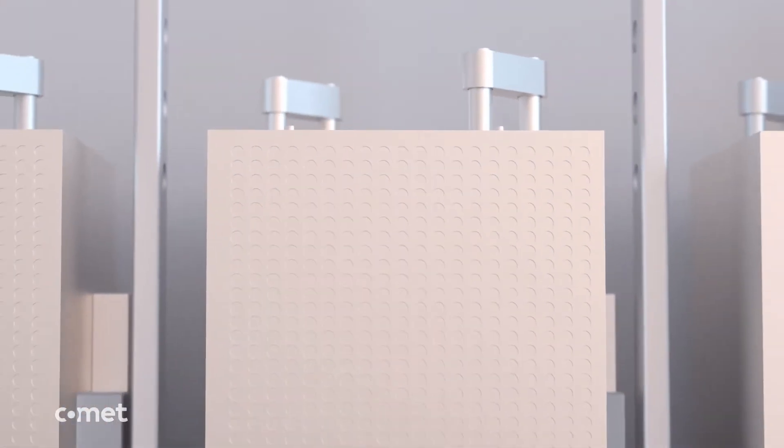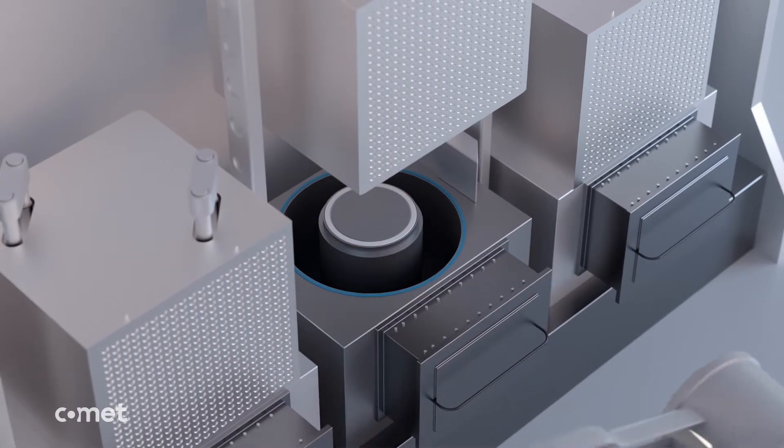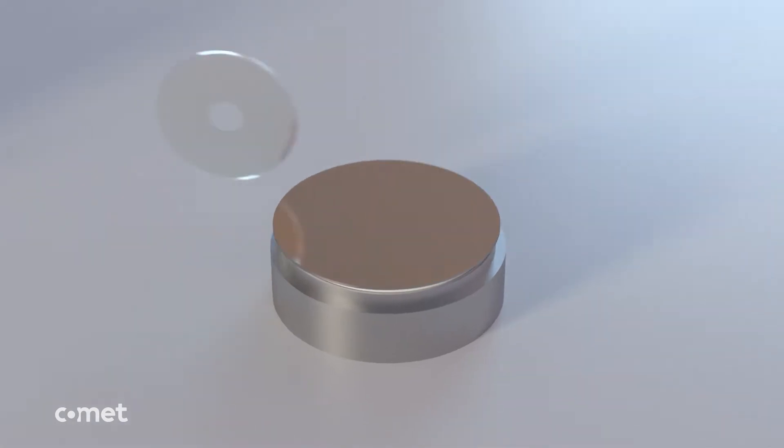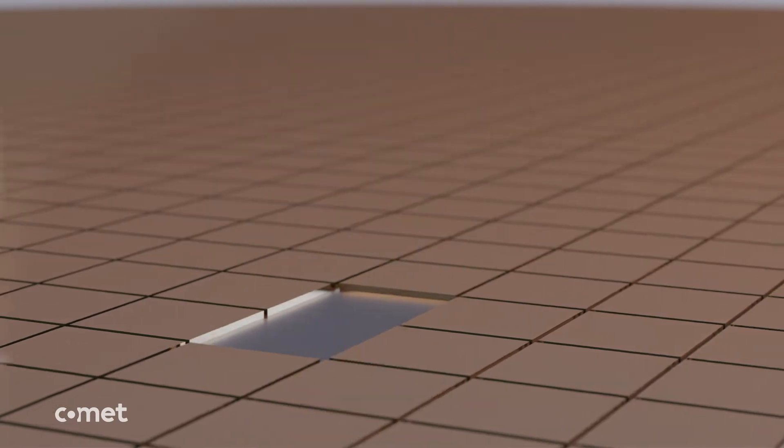One wafer can now contain thousands of identical chips that need to be separated. In the traditional process, the wafer is precisely diced and chips are taken individually out of the wafer.